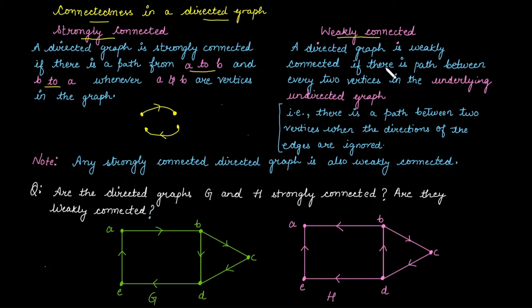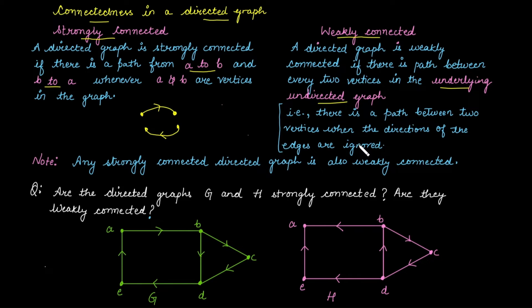Whereas a weakly connected graph means the graph is connected in its underlying undirected graph. What does this mean? It means we ignore the direction of edges and then check whether the graph is connected. So if the graph is connected after removing the direction of edges, then the graph is weakly connected.